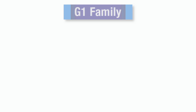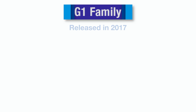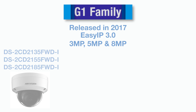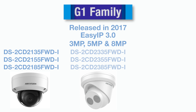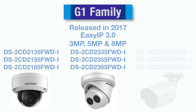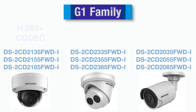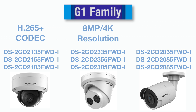The final family we are going to talk about is the G1 family, which at the time of uploading this video is the latest family of Hikvision cameras. Released in 2017 and marketed as the EZ IP 3.0 range, it was made up of 3MP, 5MP, and 8MP models. These include the 2135, 2155, and 2185 dome camera; the 2335, 2355, and 2385 turret camera; the 2035, 2055, and 2085 mini bullet camera; and many more. The G1 family features all the latest technology including H.265 Plus codec compression, 4K 8MP resolution models, stronger XIR 2.0 IR LEDs, and a variety of other advanced features not found in earlier camera families.